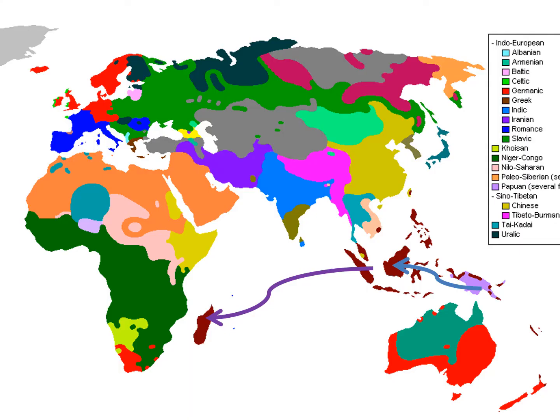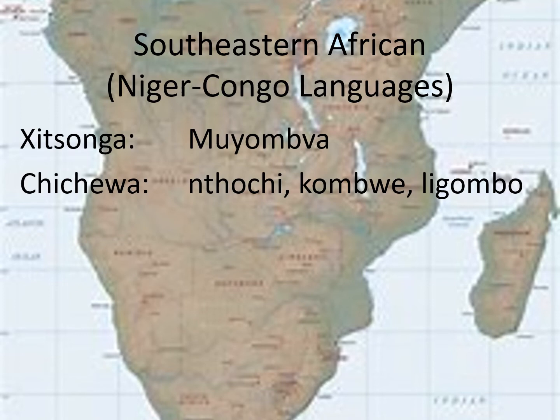On to the actual African continent, crossing the channel onto Southeast Africa. The entire African continent is home to over 2,000 languages and a number of language families. The dominant language family in Southeast Africa is the Niger-Congo language family. The first language listed is Shitsonga, a language from Mozambique, where the word for banana is Moyumba. The other language listed is Chichewa, native to modern-day Malawi.